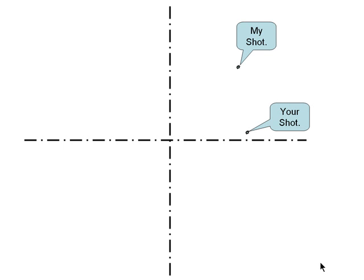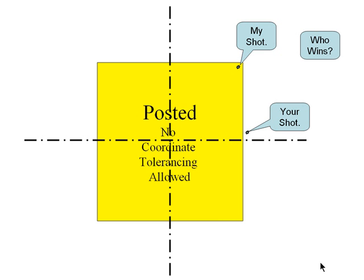Using a string or pointer, illustrate that your shot is further away. When the posted sign appears, explain that if they are using plus minus tolerances, your shot would be good where theirs would be bad. For instance, if they were using plus or minus five thousandths on a drawing, this shot is further away than five thousandths.